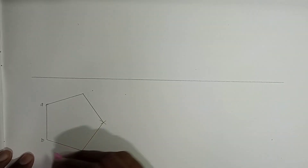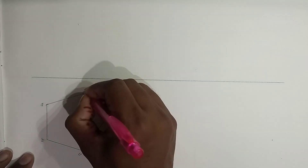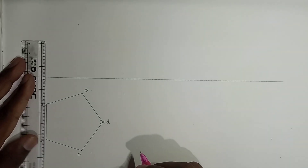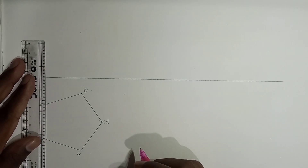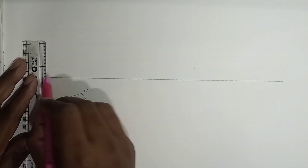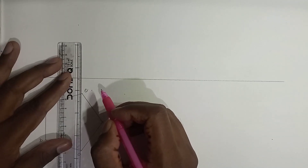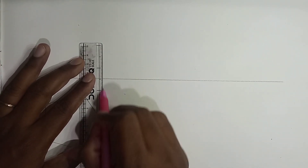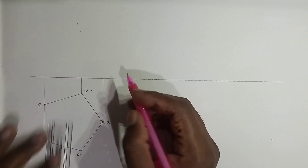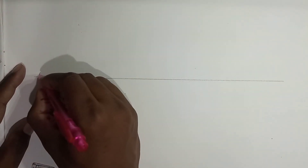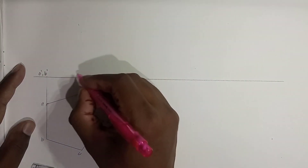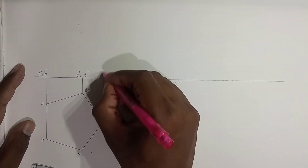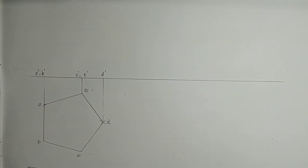So the pentagon has points A, B, C, D, and E. We project it into the front view to get the edge view. In the front view this will be A-dash, B-dash, C-dash, E-dash, and D-dash.